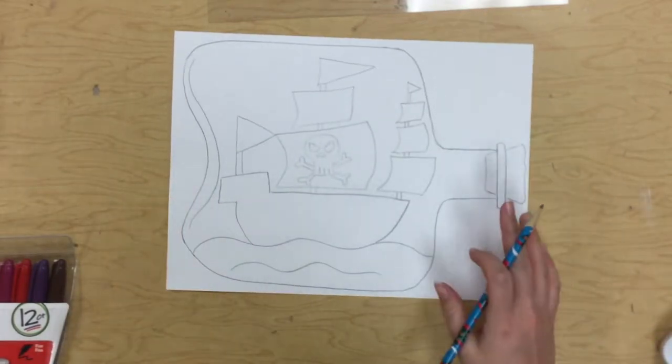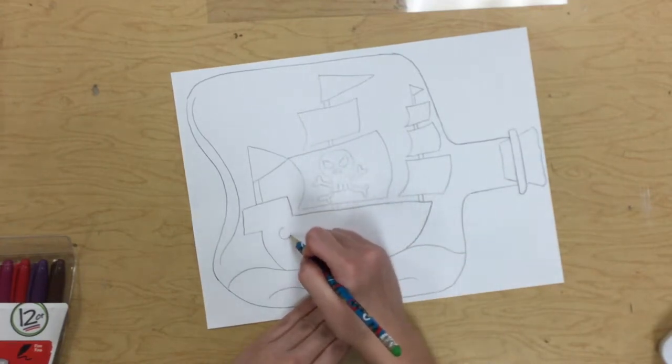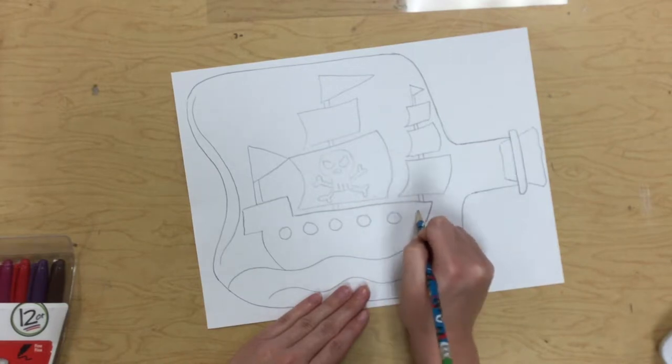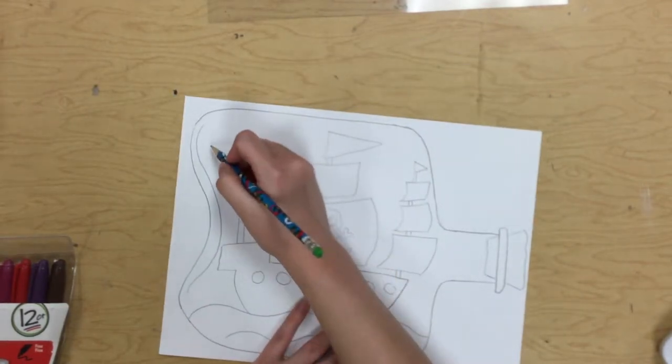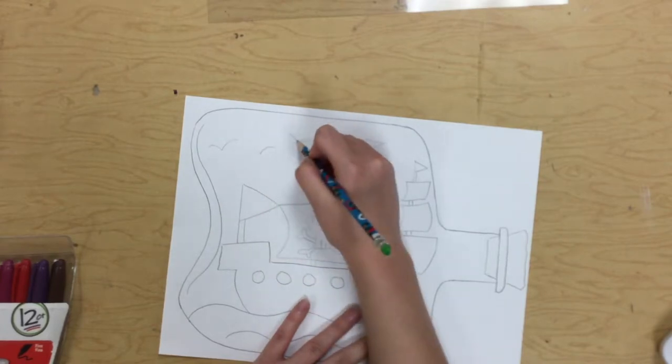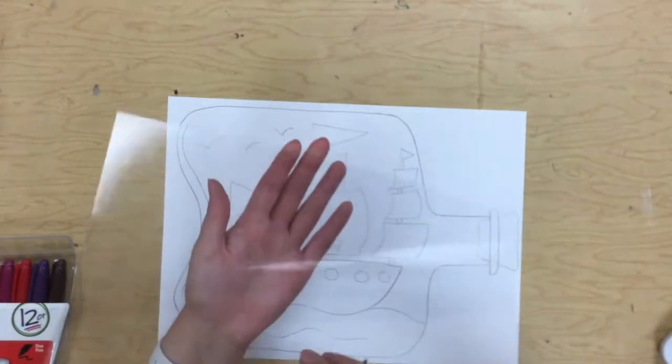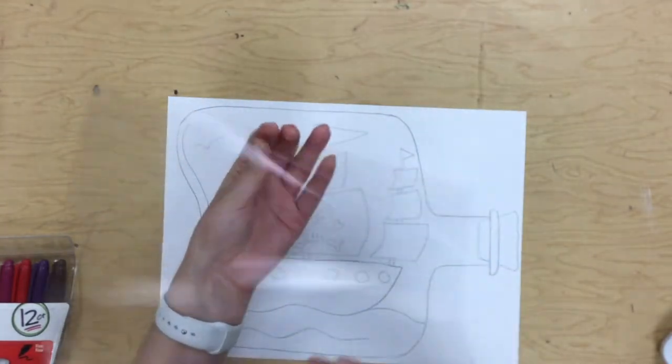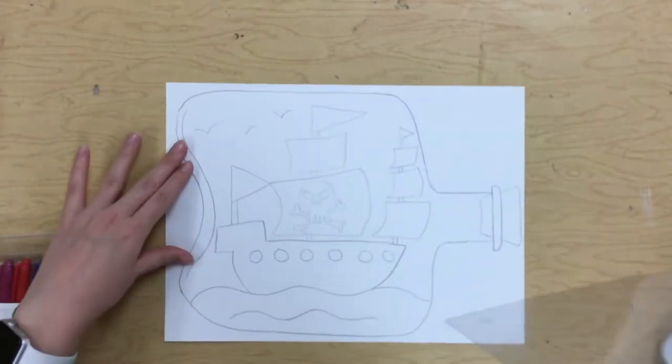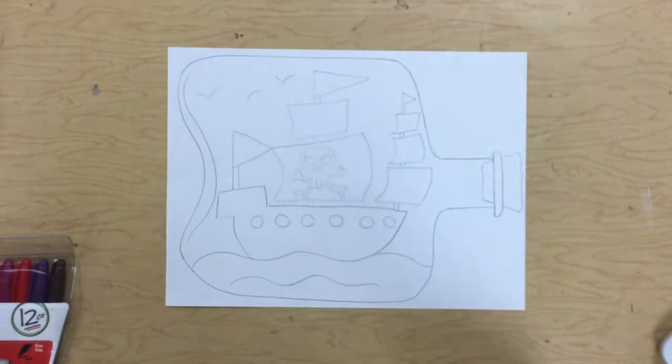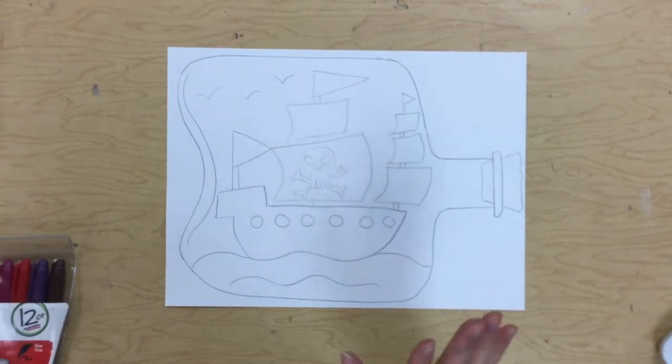Now the reason we're drawing it on here first is of course if we make any mistakes we can erase it. But then once you're completed with your design on your paper, then we're going to transfer that to our transparency paper. I know for you guys it's probably hard to see this on the video, but it's a thin plastic sheet. And once you're finished, you can see I tried to fill up a lot of my space in my ship.